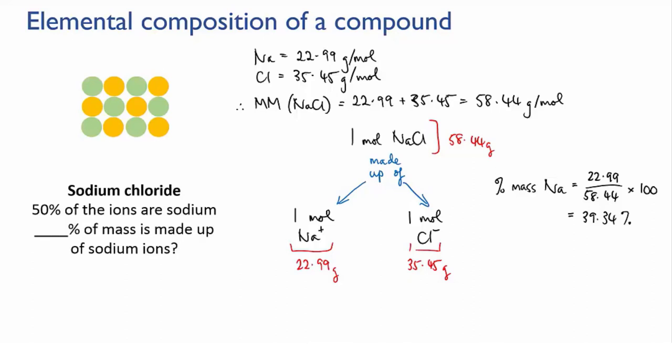We can double check we're correct by working out the percentage of chloride. If all goes well those two percentages should add up to 100%. So we say 35.45 divided by 58.44 times 100 and that gives us 60.66%. And yes those two percentages do add up to 100%.